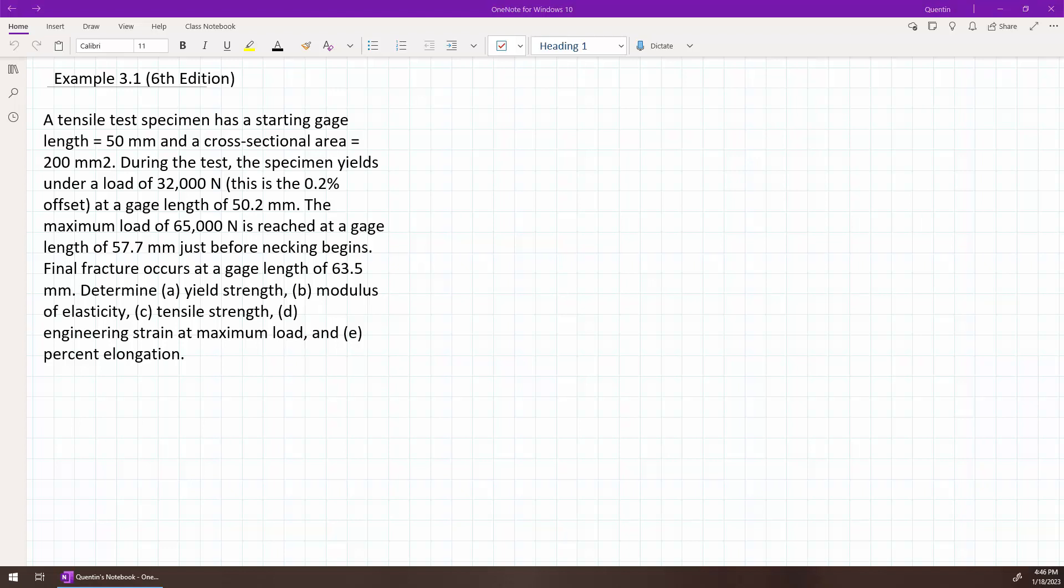So we're supposed to calculate five different things here. We're supposed to calculate the yield strength, the modulus of elasticity, the tensile strength, the engineering strain at maximum load, and the percent elongation.